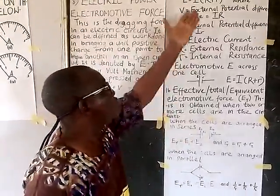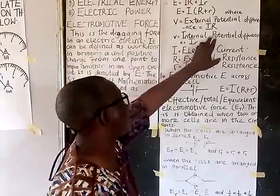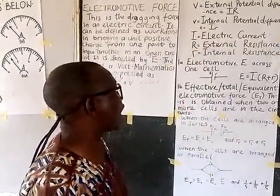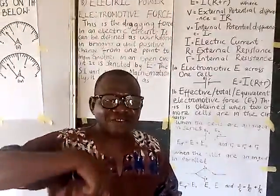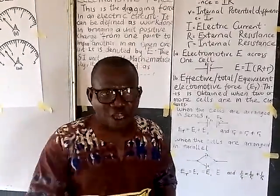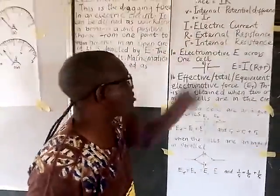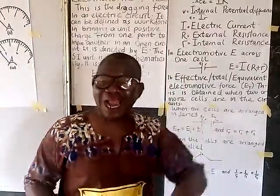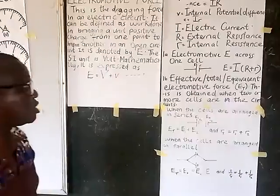In the expression E = I(R + r): capital R stands for external resistance — that is, resistance not found inside the cell, meaning resistors connected to the cell externally. Small r is the internal resistance, which is the resistance the cell itself offers to the flow of current through it.